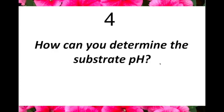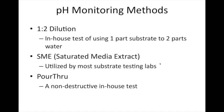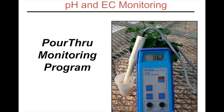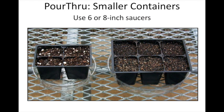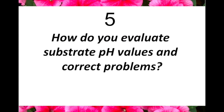So how do you determine substrate pH? You can use 1:2 dilution, SME testing that most labs do, or the pour-through method. In-house, the 1:2 dilution or pour-through works very well. A lot of Proven Winners recommendations are based on the 1:2 dilution, but pH values are essentially the same no matter which test procedure you use — the difference comes in on EC values. For the pour-through method: irrigate the plant, let it sit for an hour, put a saucer underneath, give it enough water to get about 50 mL out of the bottom, collect the leachate, and test for pH and EC. For cell packs, use a whole cell pack to get enough of a sample for testing.